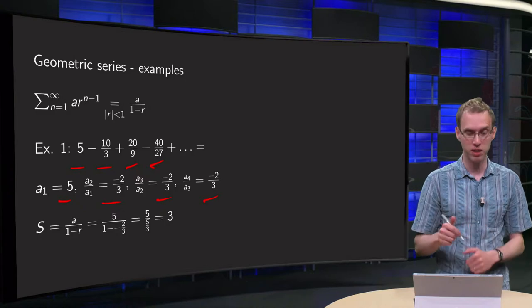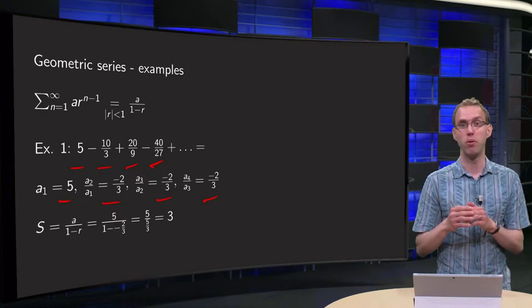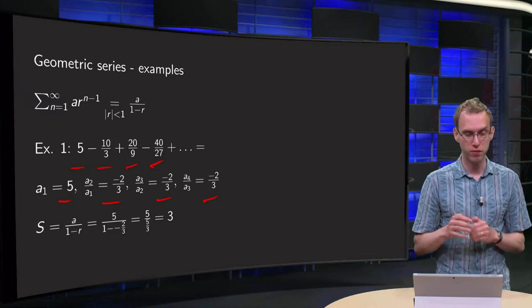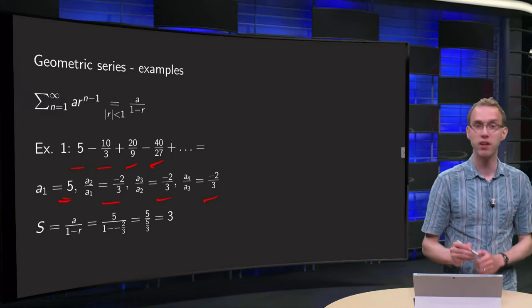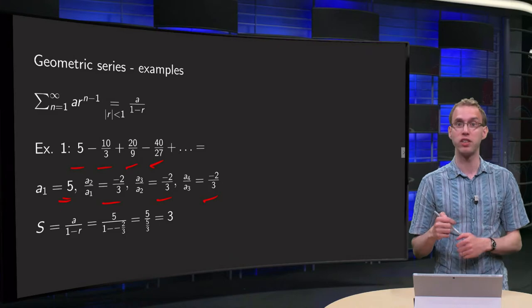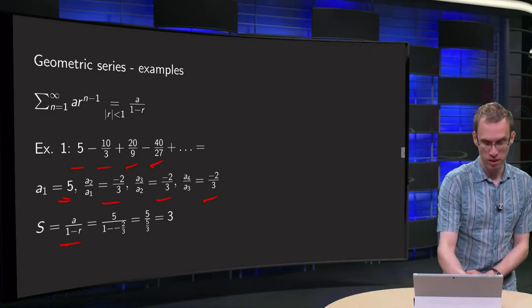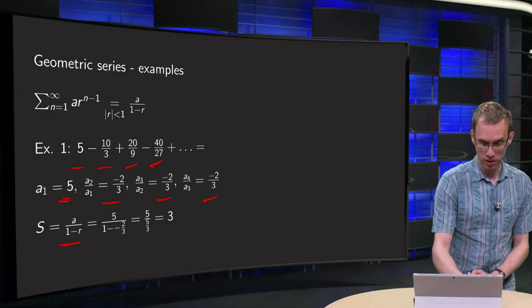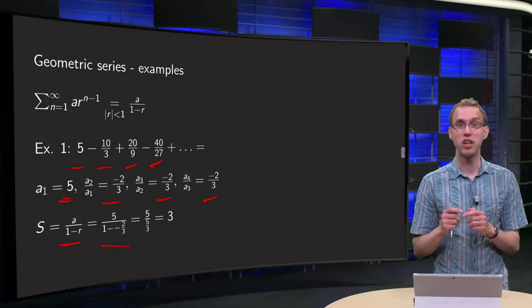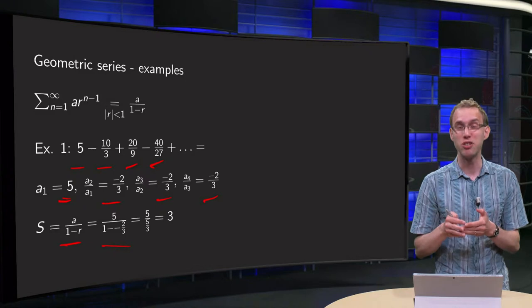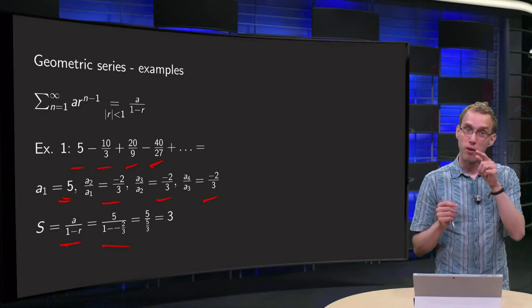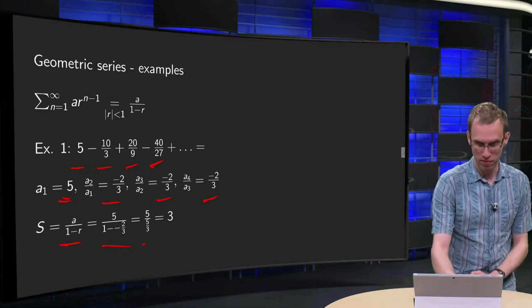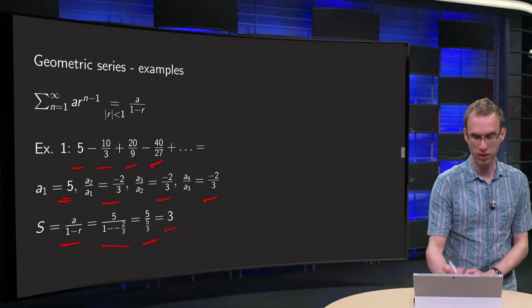which means that we have a geometric series with a ratio minus 2 over 3, which is in norm smaller than 1, and as a first term a1 equals 5, which means that our series converges, and the sum equals a divided by 1 minus r. So a equals 5, mind the signs now, because our r is minus 2 over 3, we get 5 divided by 1 minus minus 2 over 3, so 5 divided by 5 over 3, and that equals 3.